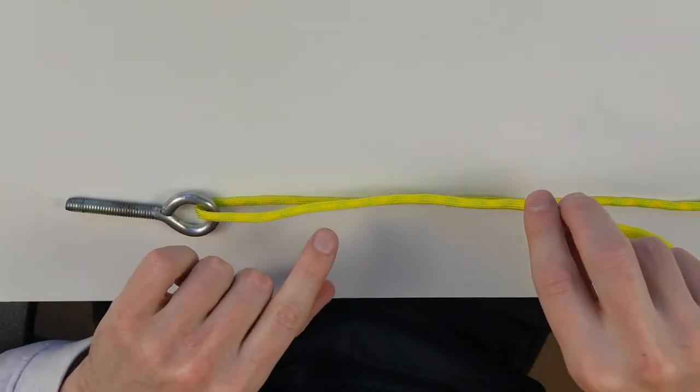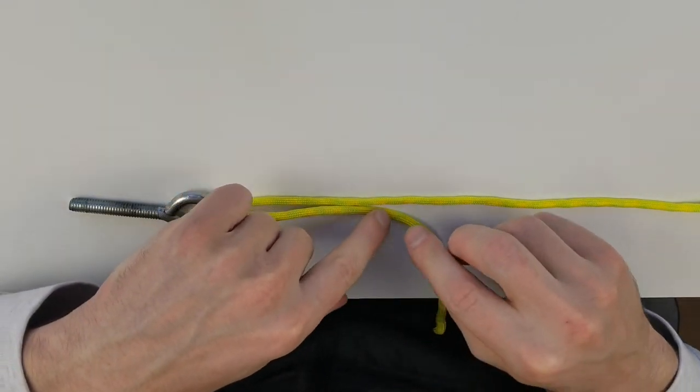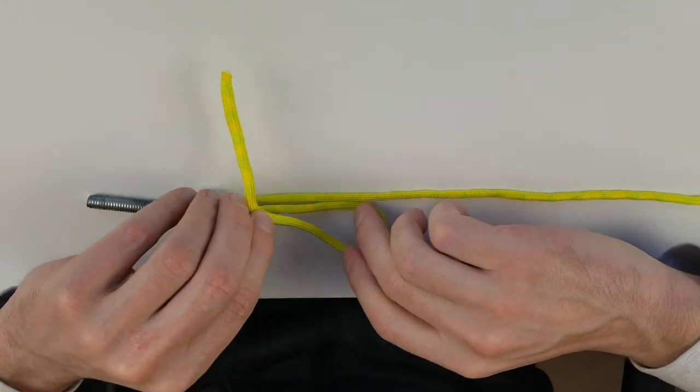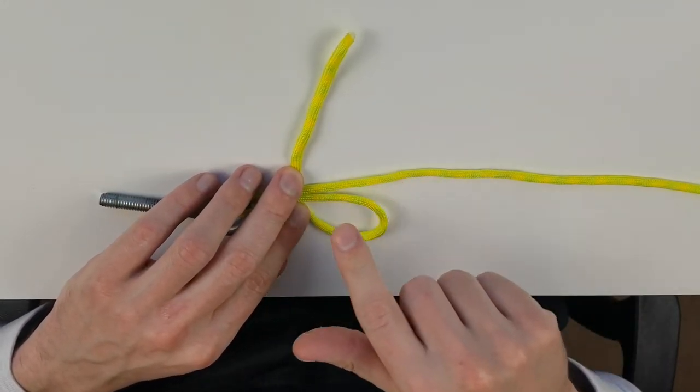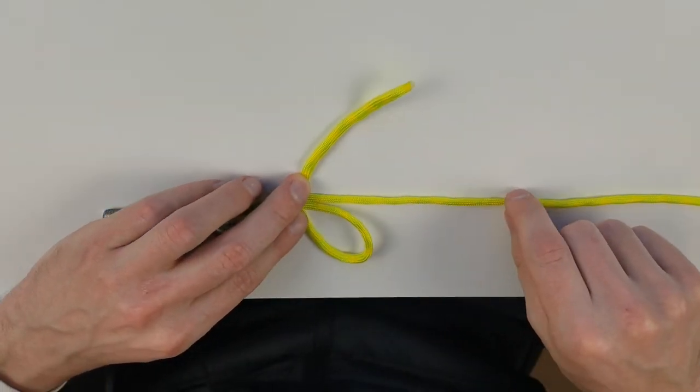We're going to take our tag end and we're going to basically come back just like that, so we're going to come back and loop it over. We have our main line and then we have the loop, and then our tag end is going to be here.